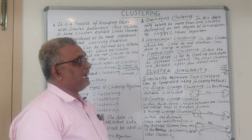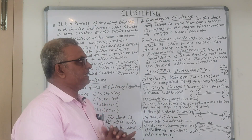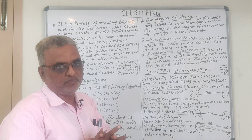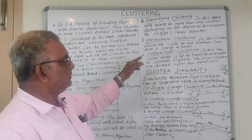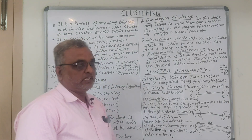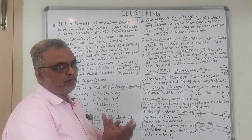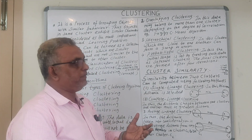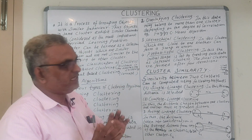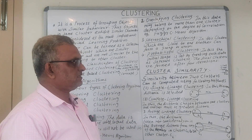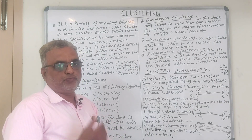Number three is hierarchical clustering, in which clusters that are close to one another can form a group and be considered as one union. Number four is probabilistic clustering, in which the value of probability is used as one of the major criteria. The initial stage is set by treating each data point as a separate cluster, and the final clusters are formed after a few iterations.